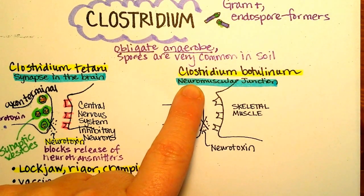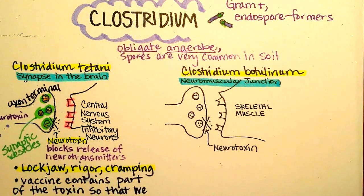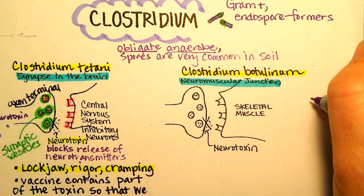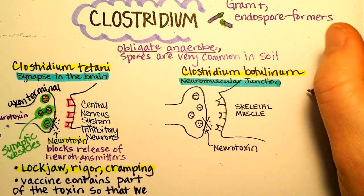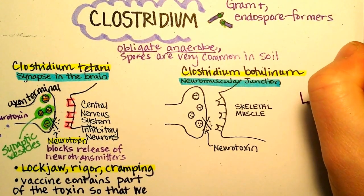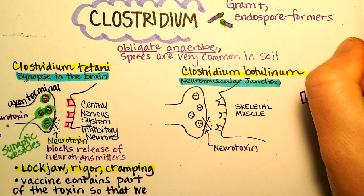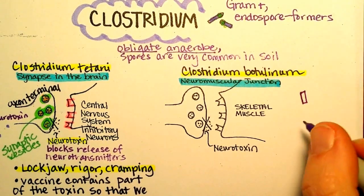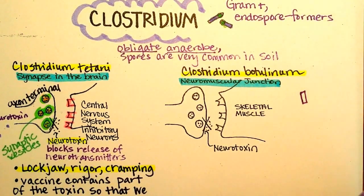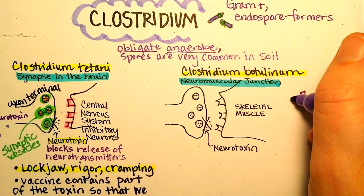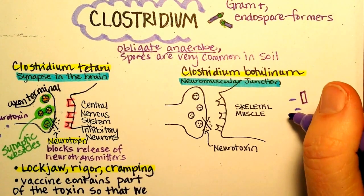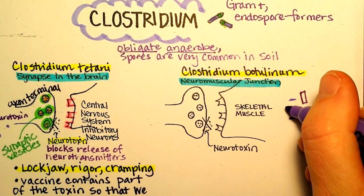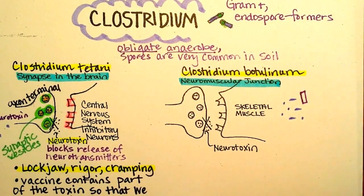Clostridium botulinum is a gram-positive rod and endospore former. Just like Clostridium tetani, it is going to produce a neurotoxin. But its neurotoxin binds to different synapses.